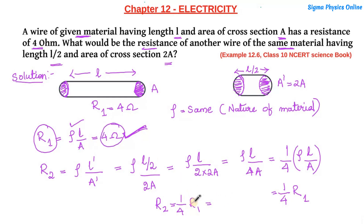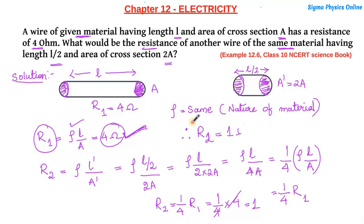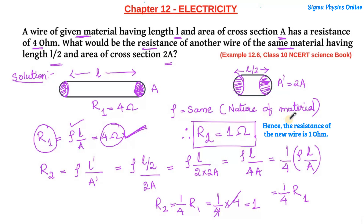We have the original resistance value R1 = 4 ohm. Substituting into the equation: R2 = (1/4) × 4 = 1 ohm. So the resistance of the new wire is 1 ohm — one-fourth of the original resistance of 4 ohm.